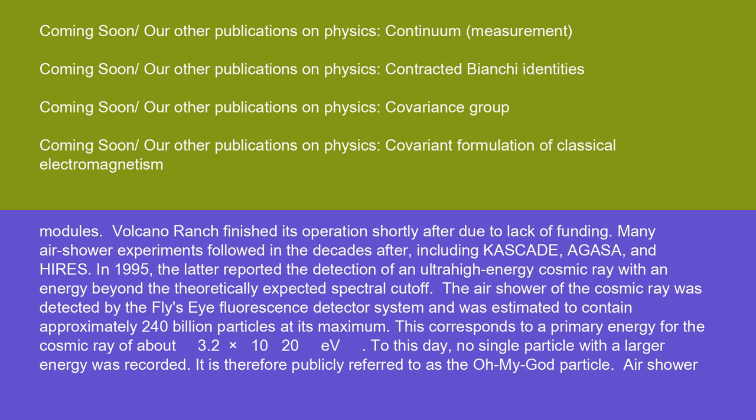Many air shower experiments followed in the decades after, including Cascade, Agasa, and Hires. In 1995, the latter reported the detection of an ultra-high-energy cosmic ray with an energy beyond the theoretically expected spectral cutoff. The air shower of the cosmic ray was detected by the Fly's Eye fluorescence detector system and was estimated to contain approximately 240 billion particles at its maximum. This corresponds to a primary energy for the cosmic ray of about 3.2 times 10^20 eV. To this day, no single particle with a larger energy was recorded. It is therefore publicly referred to as the oh my god particle.